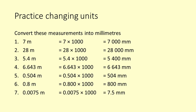And finally, 0.0075 metres. Again we want to move at a block of three places, so 0.0075 times 1000 is 7.5 millimetres, so very small.